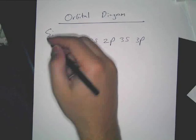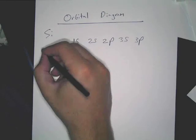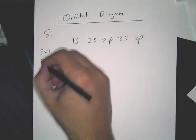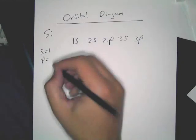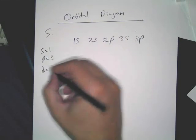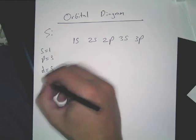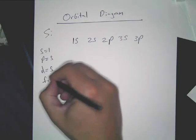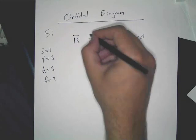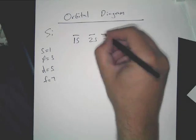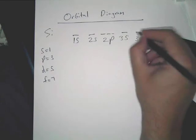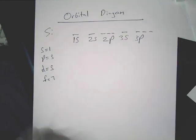Remember: s is equal to 1 orbital. What's p equal to? 3. D is equal to what? 5. And then f is 7. So: 1s, 2s, 2p, 3s, 3p.